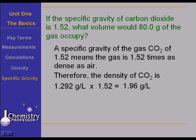Now it's easy to work the problem, now that we have figured this out. 80 grams of carbon dioxide times a liter over 1.96 grams tells us that we have, after canceling the units, a volume of 40.8 liters.